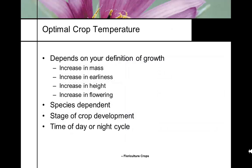The optimal crop temperature for plant production in the greenhouse depends on your definition of growth, which is crop-dependent. The definition of plant growth for a tomato grower is different from that of a rose grower — they have different objectives. Are you going for increase in mass, earliness, plant height, more flowers? This is species dependent and changes with the stage of crop development. Chrysanthemum growers change the temperature between the vegetative and reproductive stages.